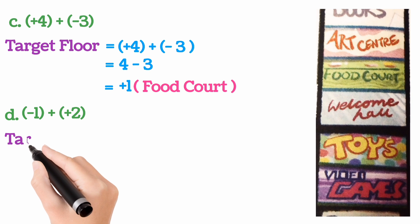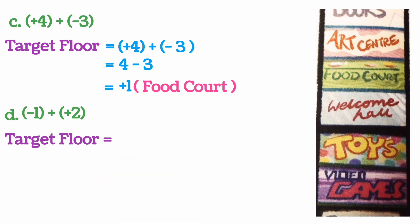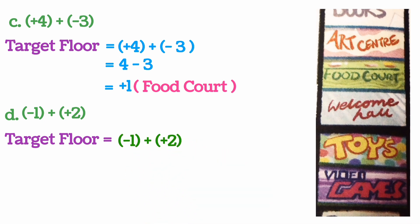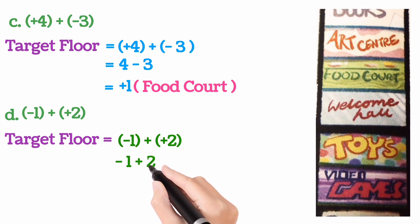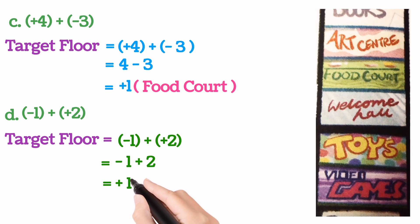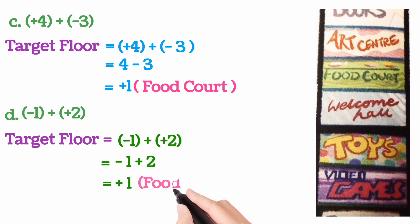Sum number D: minus 1 plus (plus 2). Target floor equals — at present we are in the first basement, that is minus 1 — plus 2. Remove the bracket: minus 1 plus 2. One is minus, one is plus — both different signs so we do subtraction and get plus 1, because the plus sign is with the bigger number. We reach the food court.